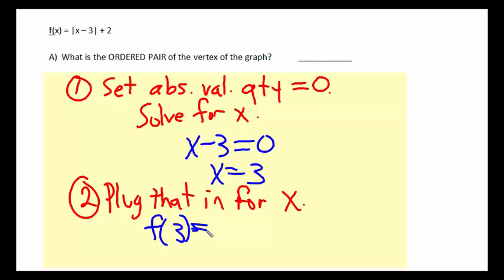we get 3 minus 3 plus 2, which is 0 plus 2, which is 2. That makes the vertex, the coordinates for the vertex, 3 for X and 2 for Y.